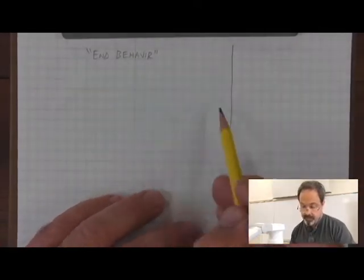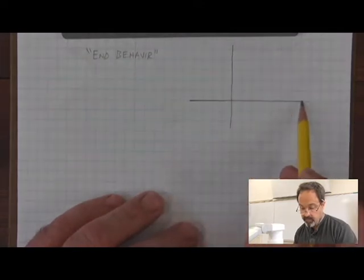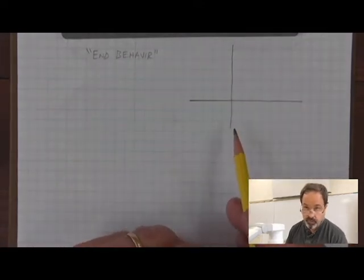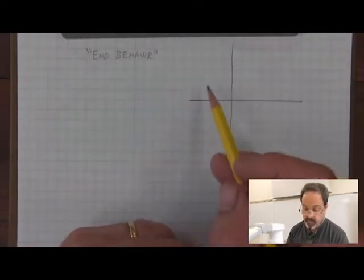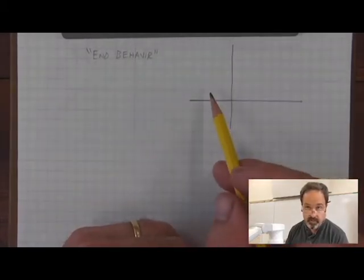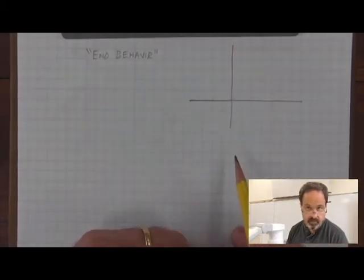Typically, when we graph a function, we're usually concerned with the graph of the function around the origin, or close to the axes.